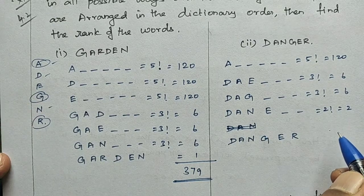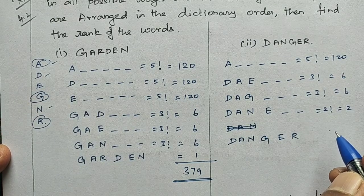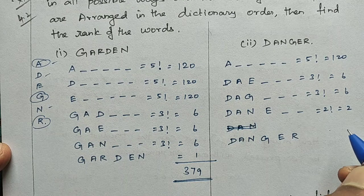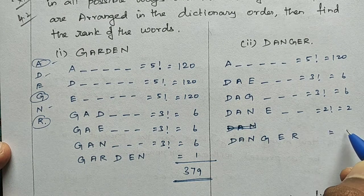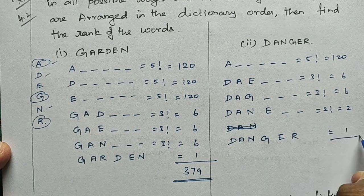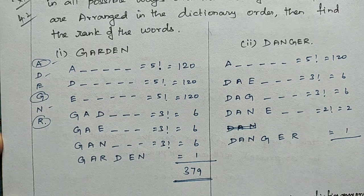So D, A, N, G, E, R — that is equal to DANGER. DANGER itself is found. The position of DANGER is confirmed by updating the count. So add 1 for the word DANGER itself.